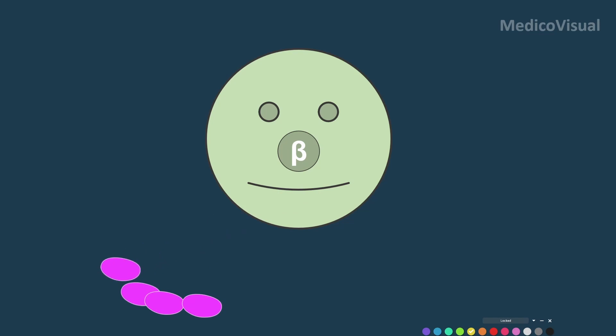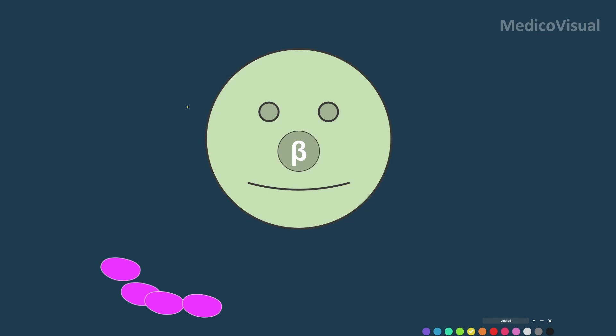normal person. Now what happens if there is insulin resistance? If there is insulin resistance, the beta cell is secreting insulin but the problem is that the blood glucose